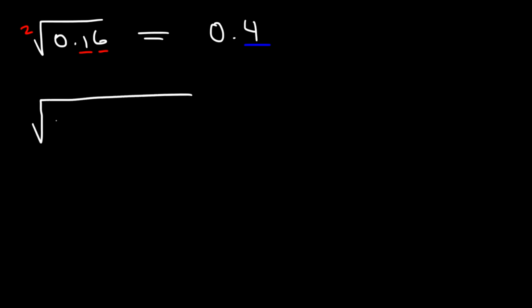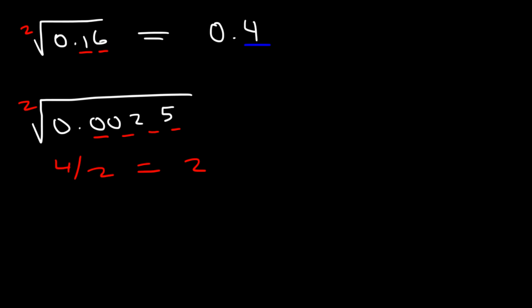What about the square root of 0.0025? Notice that there are four digits to the right of the decimal, and 4 divided by 2 is 2. So the final answer should have two digits to the right of the decimal point. The square root of 25 is 5, so this is going to be 0.05. As you can see, it has two digits to the right of the decimal point.